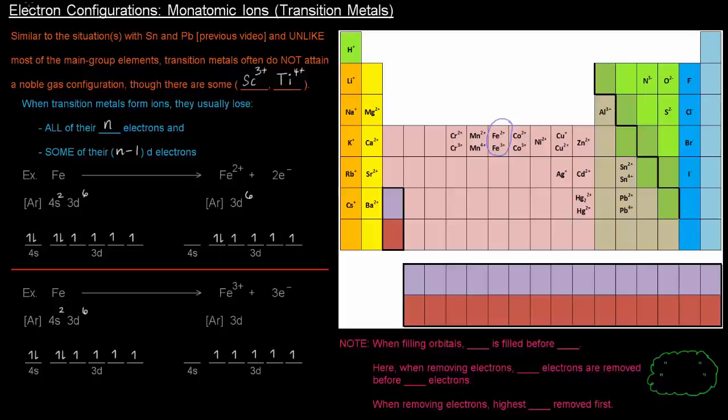Because having them all half filled is pretty stable, right? And so, the electron configuration there is going to be 3d5, right? Because we lose those 4s electrons, both of those, and we lose one from the 3d.